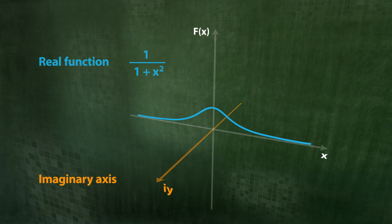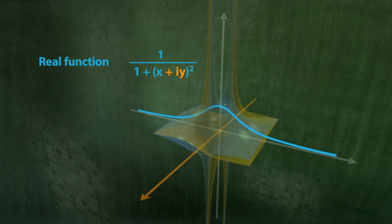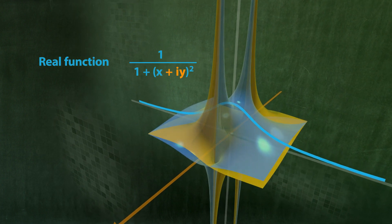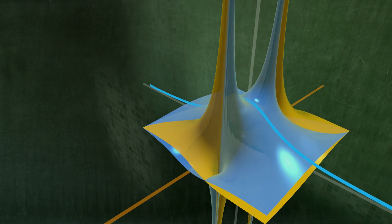First, we extend the real number x by the imaginary component i y. Each real function f can be extended to the complex plane, with x being replaced by x plus i y, as can be seen in this example.